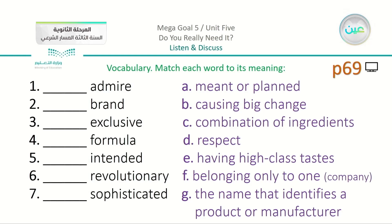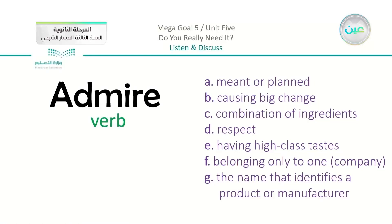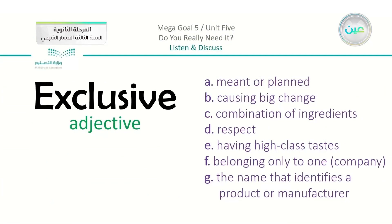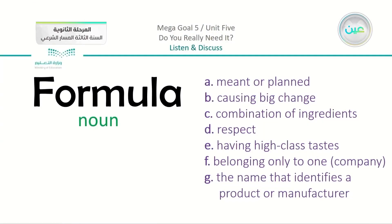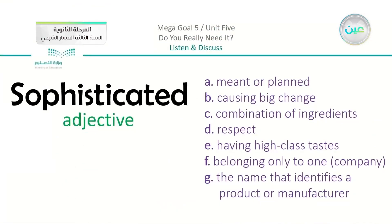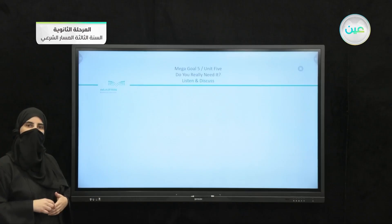On the other side we have the meanings: A — meant or planned; B — causing big change; C — combination of ingredients; D — respect; E — having high class tastes; F — belonging only to one, usually a company; G — the name that identifies a product or manufacturer. If you already know some of these words, simply match them. Now let's confirm the parts of speech: admire is a verb, brand is a noun, exclusive is an adjective.